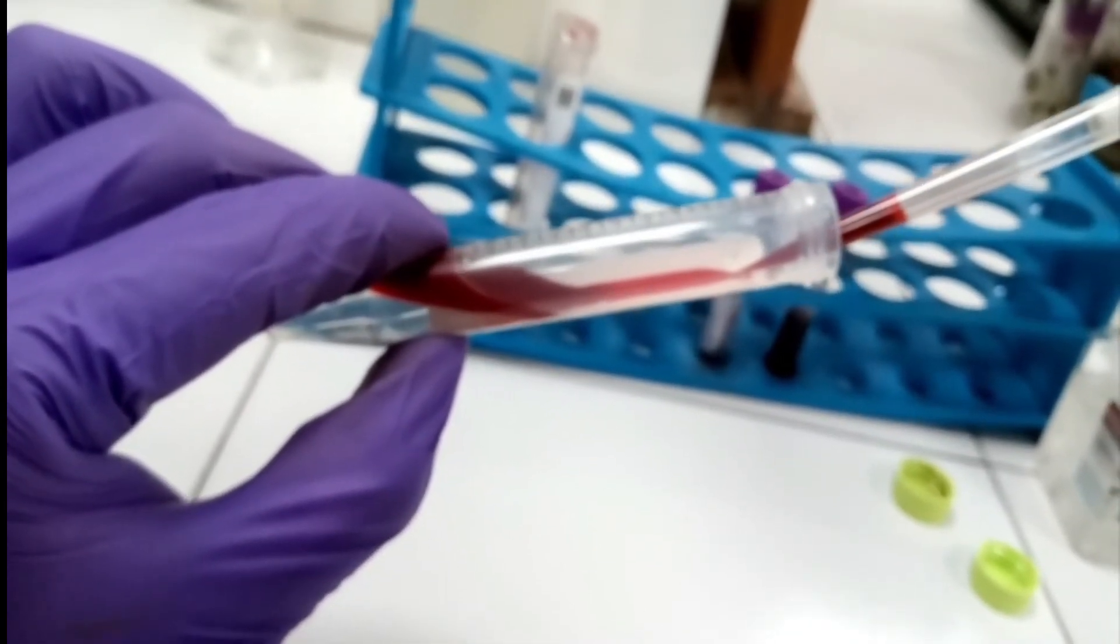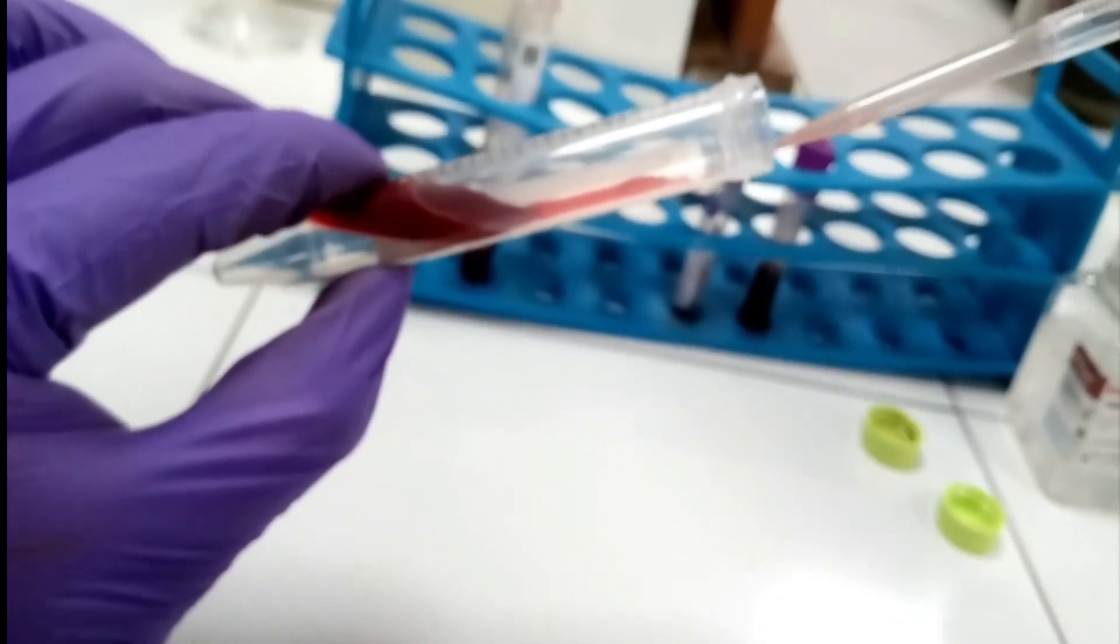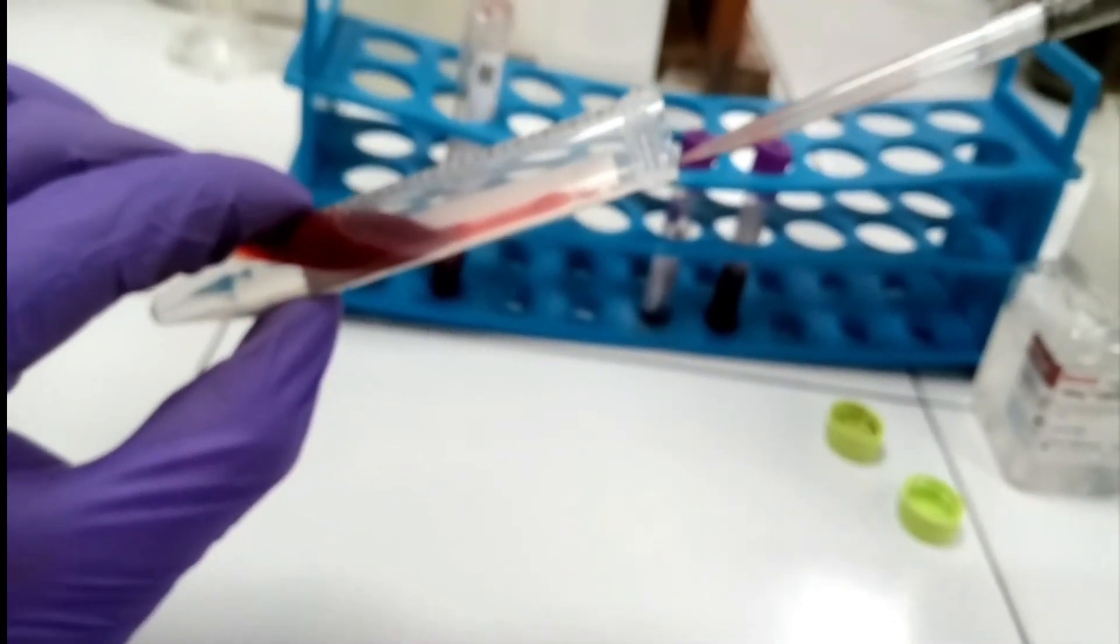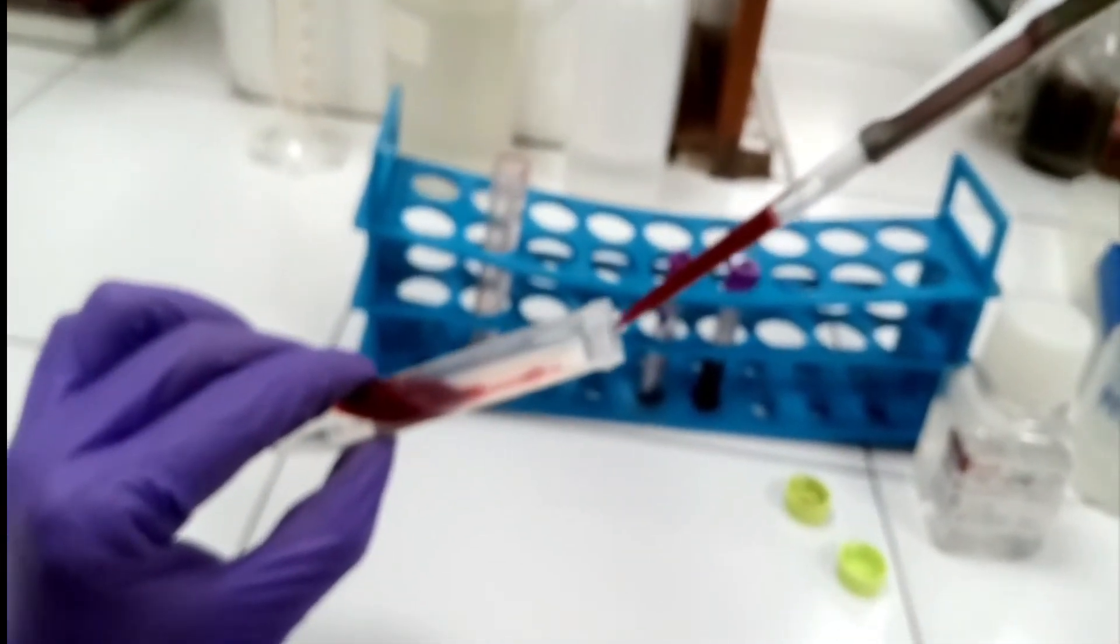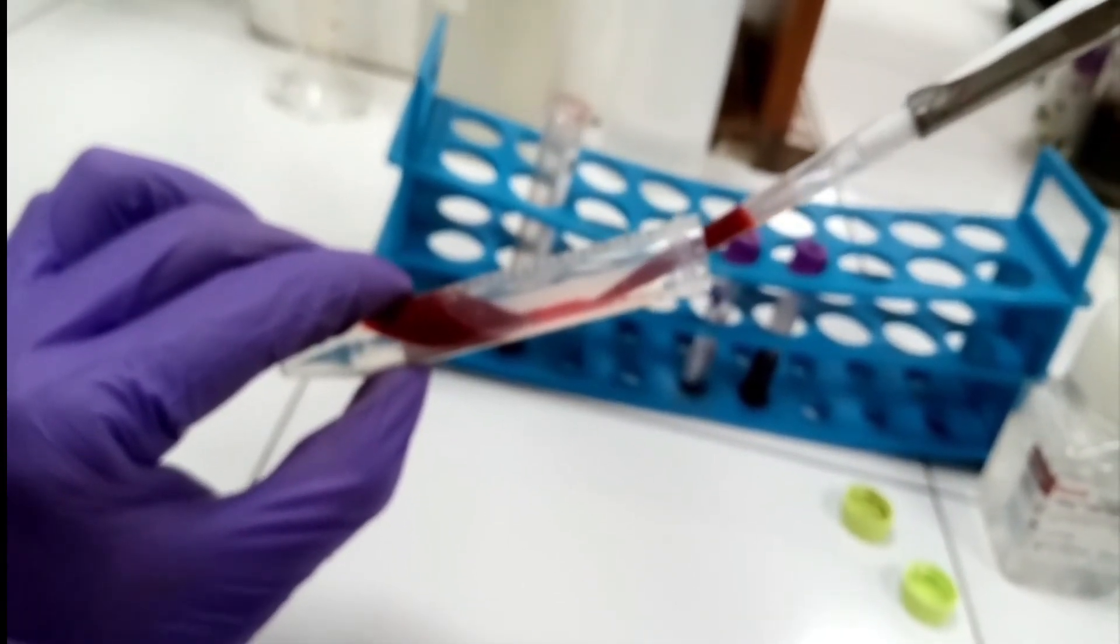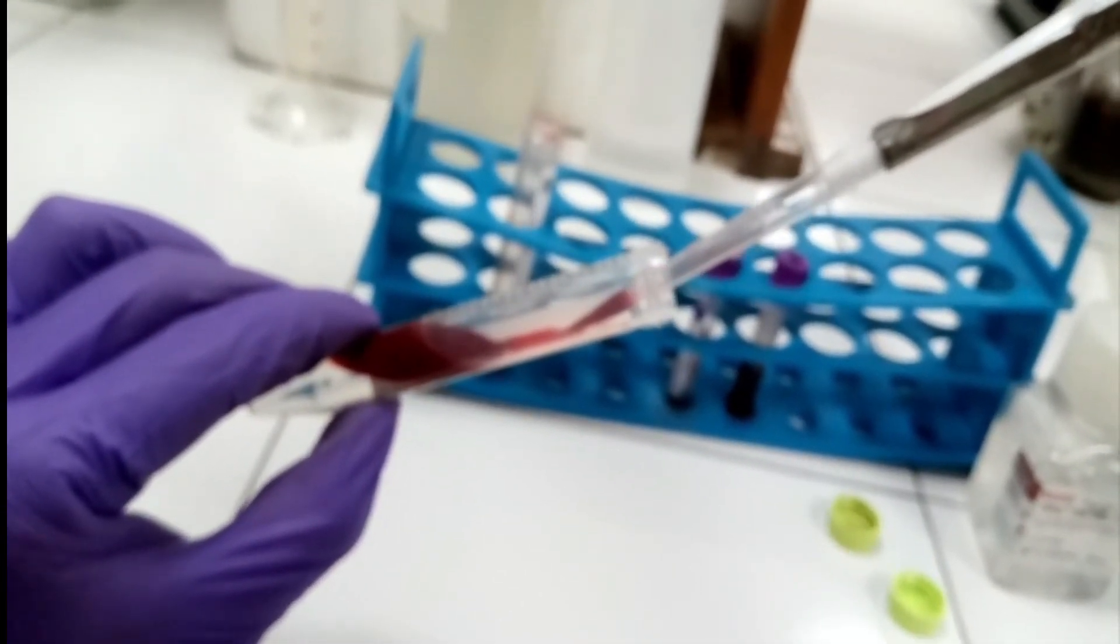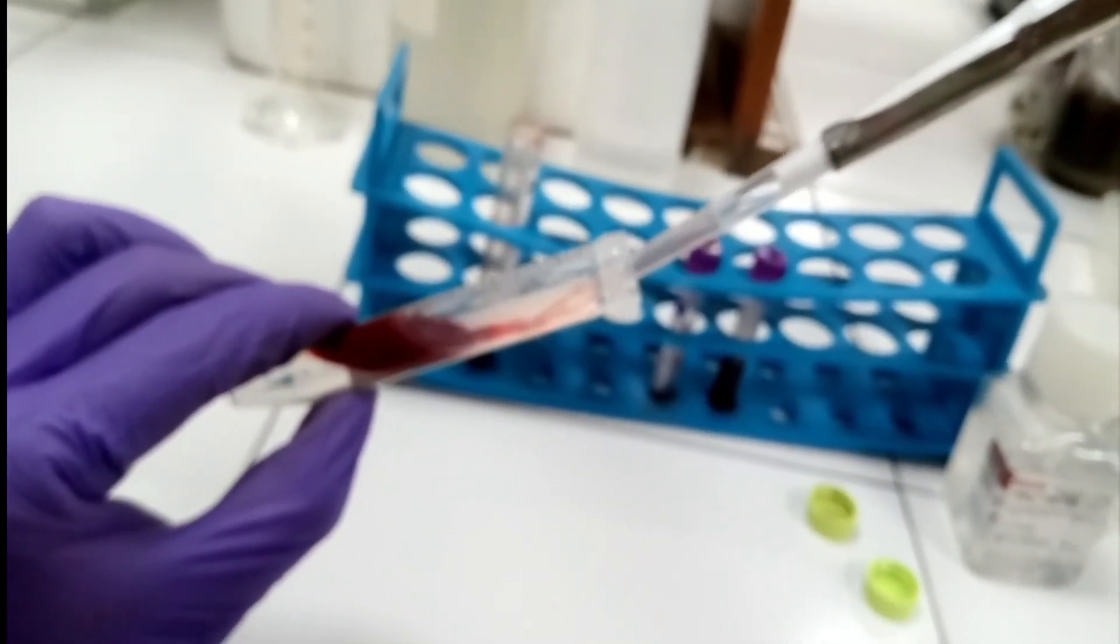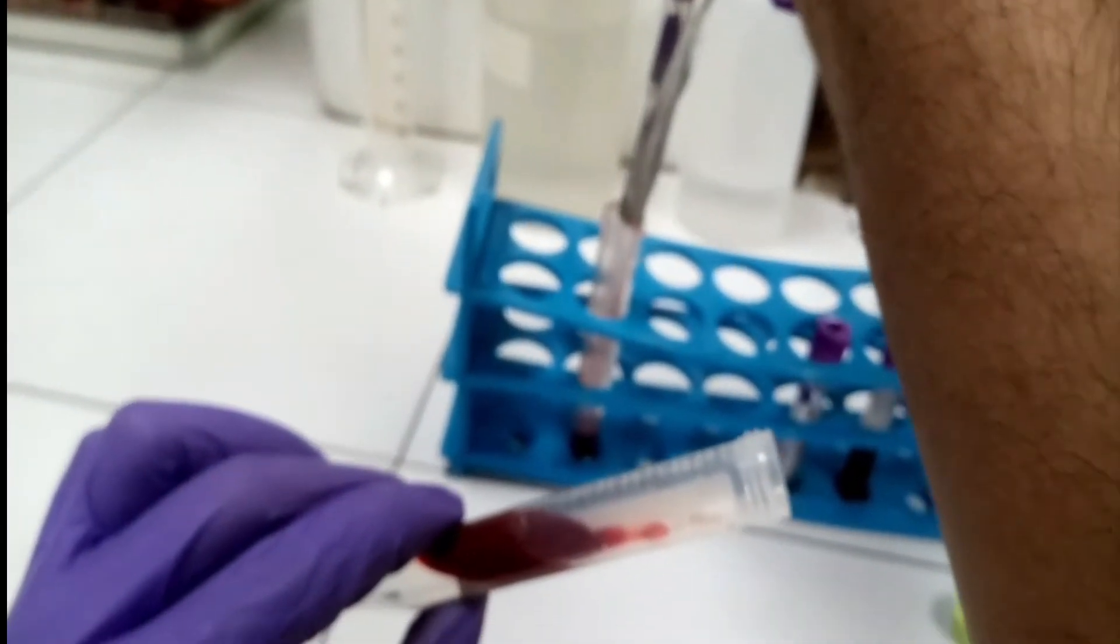Even if the slightest disturbance happens while pouring the blood, it will mix with the Ficoll and the appropriate separation during density gradient centrifugation won't happen. So we have to be extremely careful at this step, adding blood slowly and gradually from the walls in a falcon held at a 45-degree angle. As you can clearly see, I've added 3 ml of blood and no part has mixed into the Ficoll. It's clearly forming a separate layer above the Ficoll.